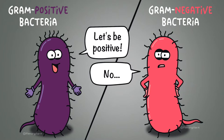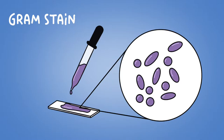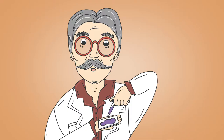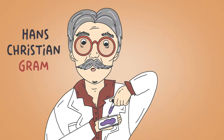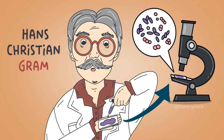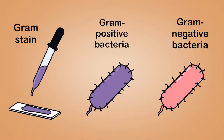They are classified based on their gram stain. Gram stain is named after the Danish physician Hans Christian Gram, who created the staining technique for visualizing bacteria. Therefore, when you refer to gram stains, use a capital G.